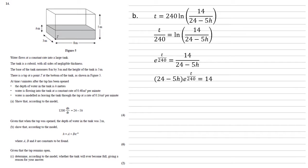Now, let's multiply both sides by that denominator. So 24 minus 5h times e to the t over 240 equals 14. Dividing both sides by that e means we have 24 minus 5h is equal to 14e to the minus t over 240.